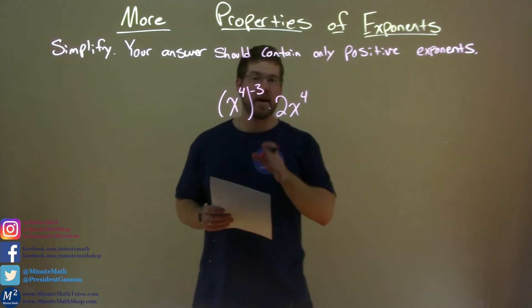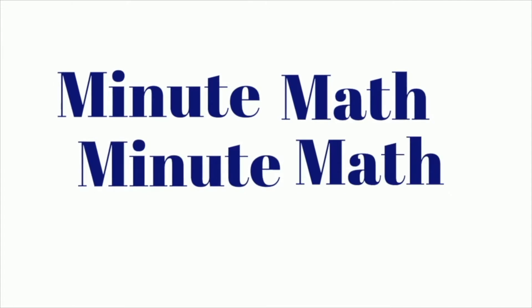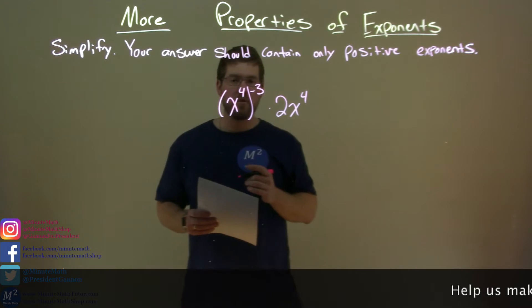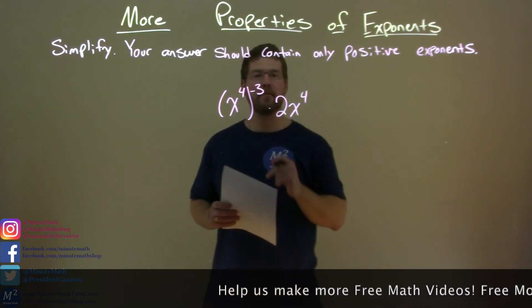And if I wanted to simplify this problem: x to the 4th power all to the negative 3rd power times 2x to the 4th power.